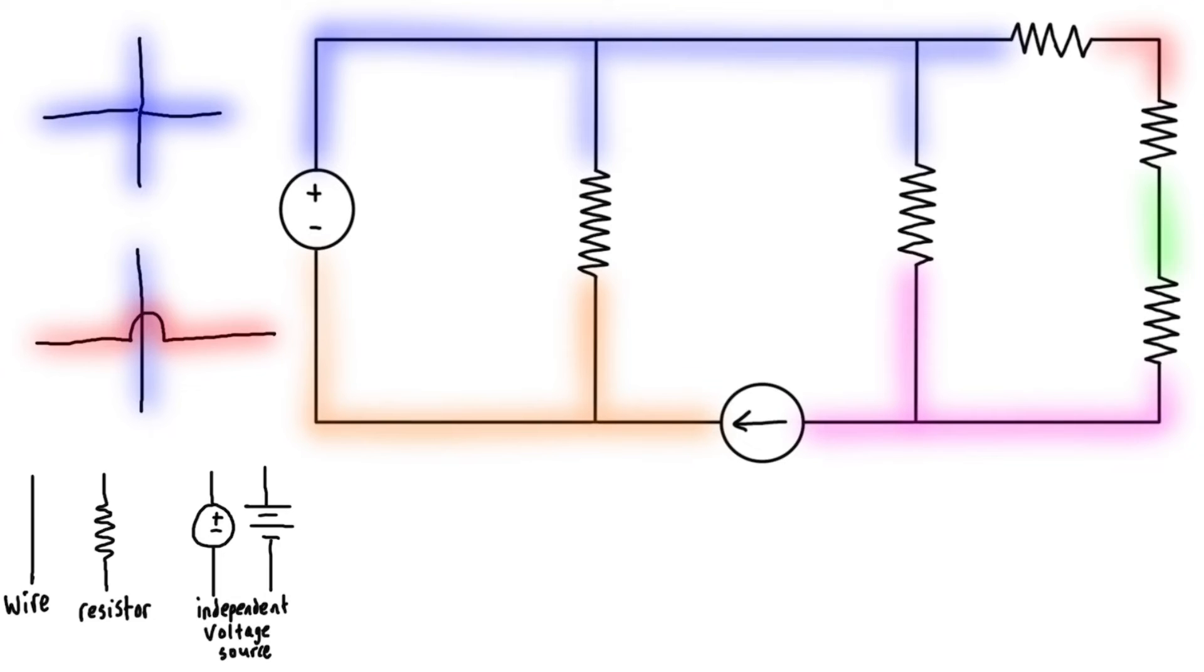We also have in the diagram an independent current source, which we just use a circle with a line in it. Basically, for the independent sources, they're going to provide a stable voltage or current at all times no matter what else is going on in the circuit. But we can have other elements like a dependent voltage source that's going to give a certain voltage depending on some other condition in the circuit. To do that, we draw it more like a diamond shape like this with the plus and minus inside. Same for a dependent current source—it's this diamond shape with an arrow, and it's going to give a specific current based on some other condition in the circuit.